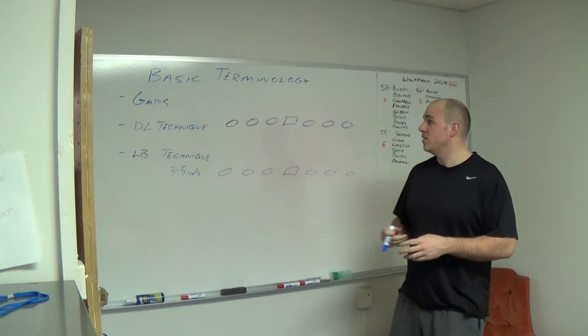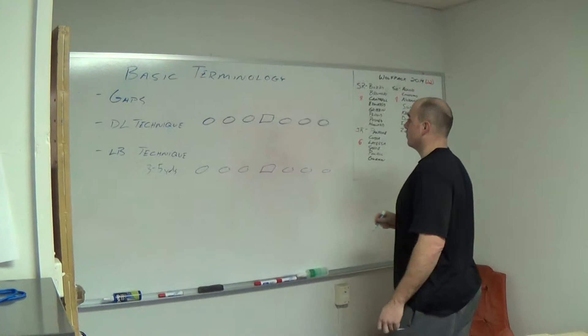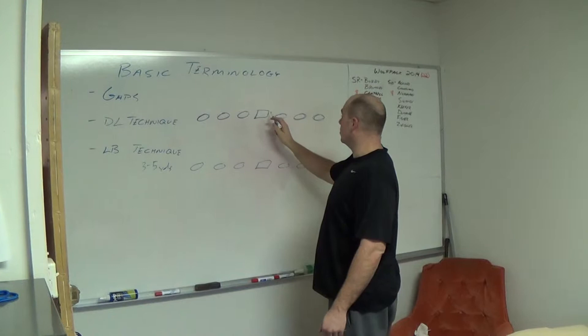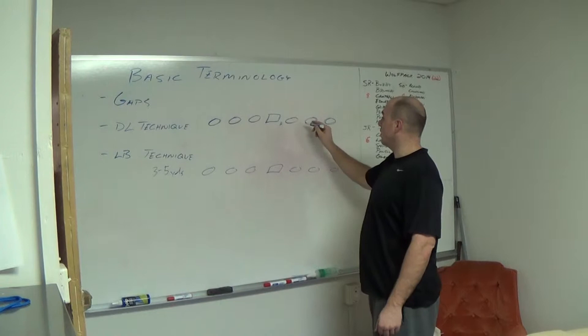The first thing we're going to talk about today is gap identification. Gap identification is done all in letters. So between the center and the guard we call that the A gap. Between the guard and the tackle we call that the B gap.